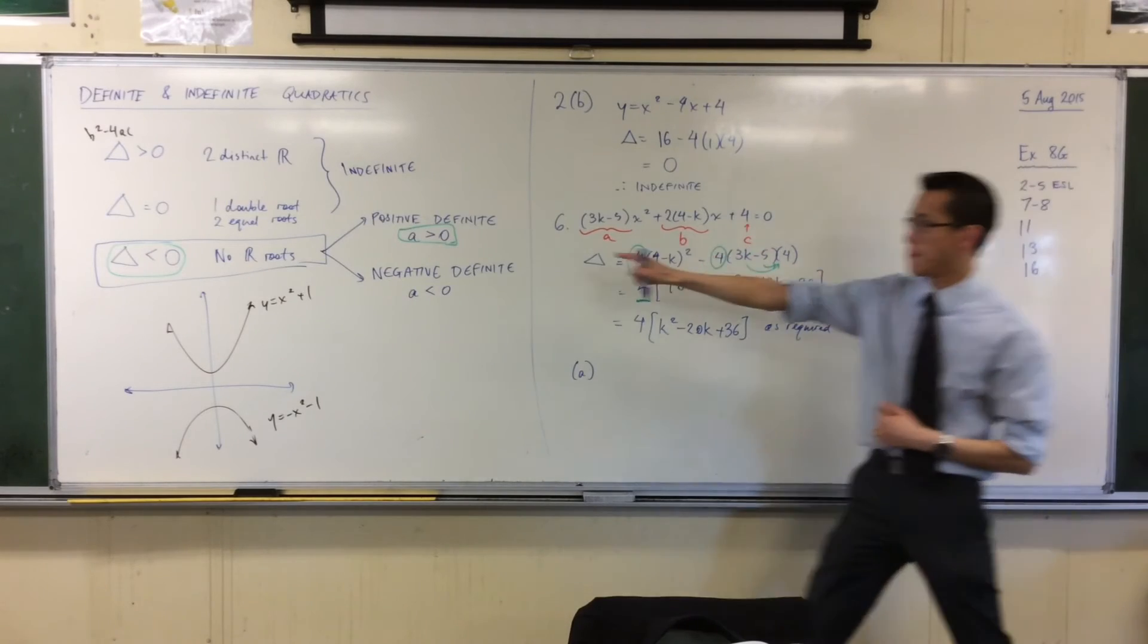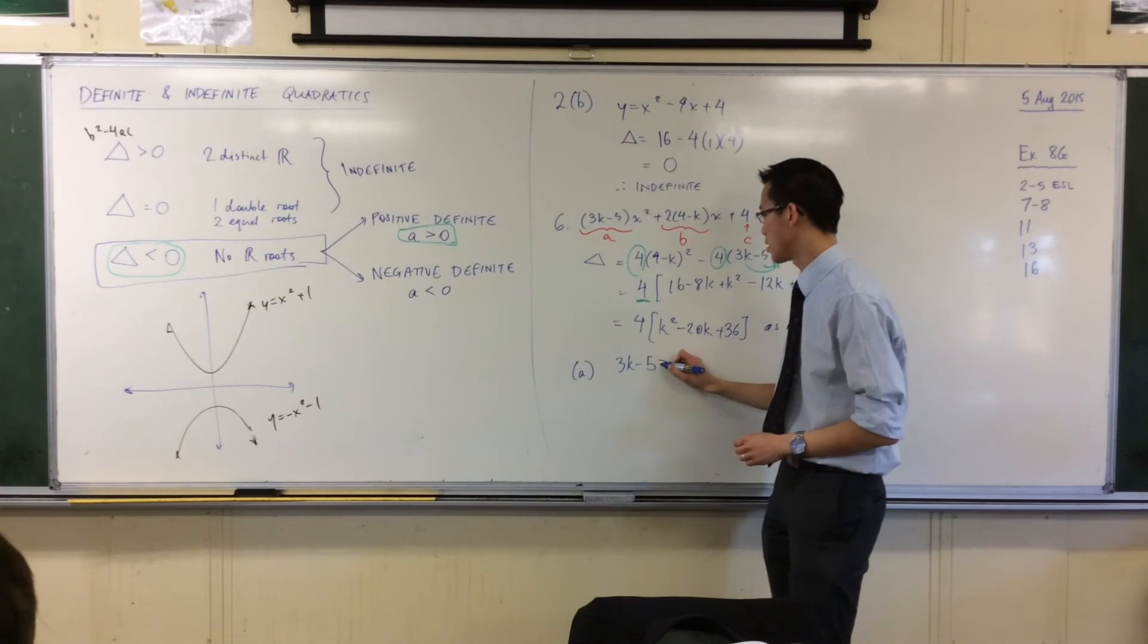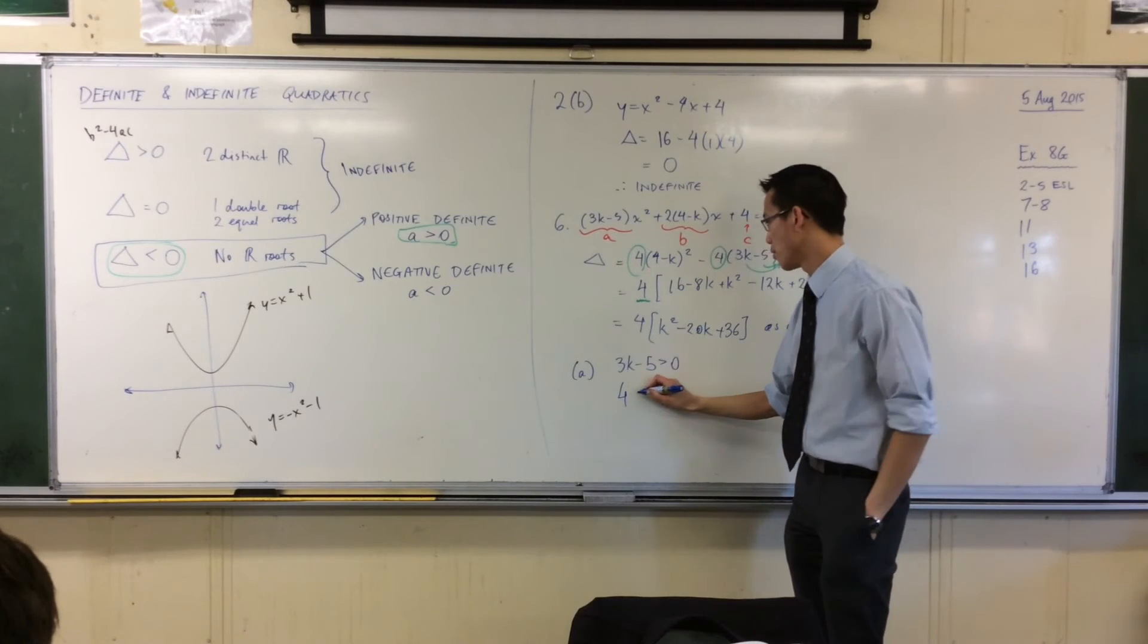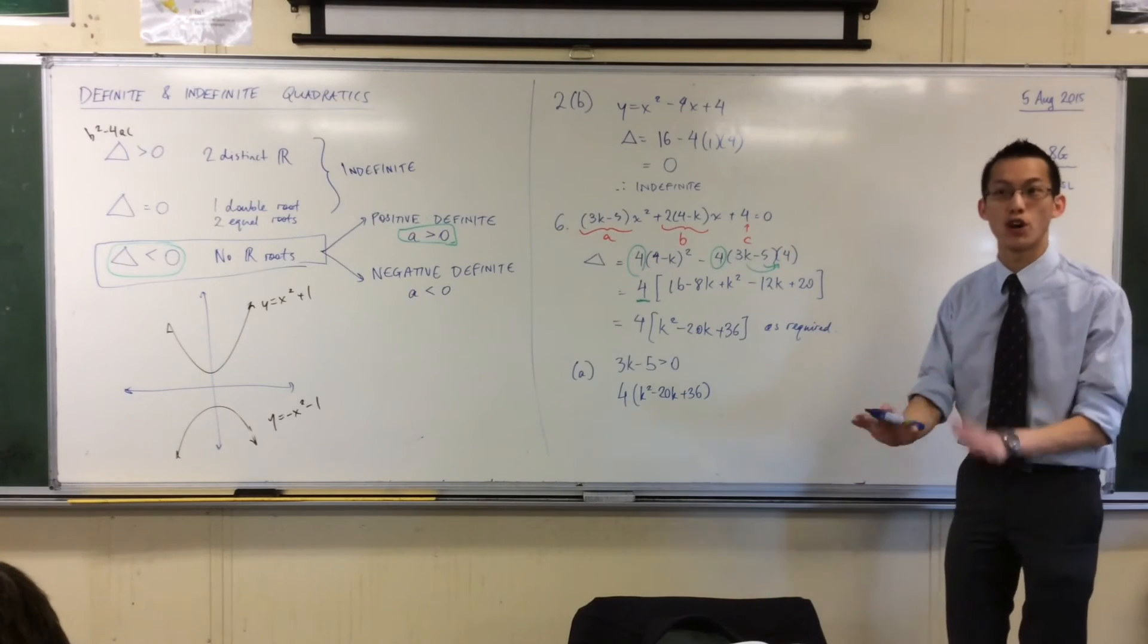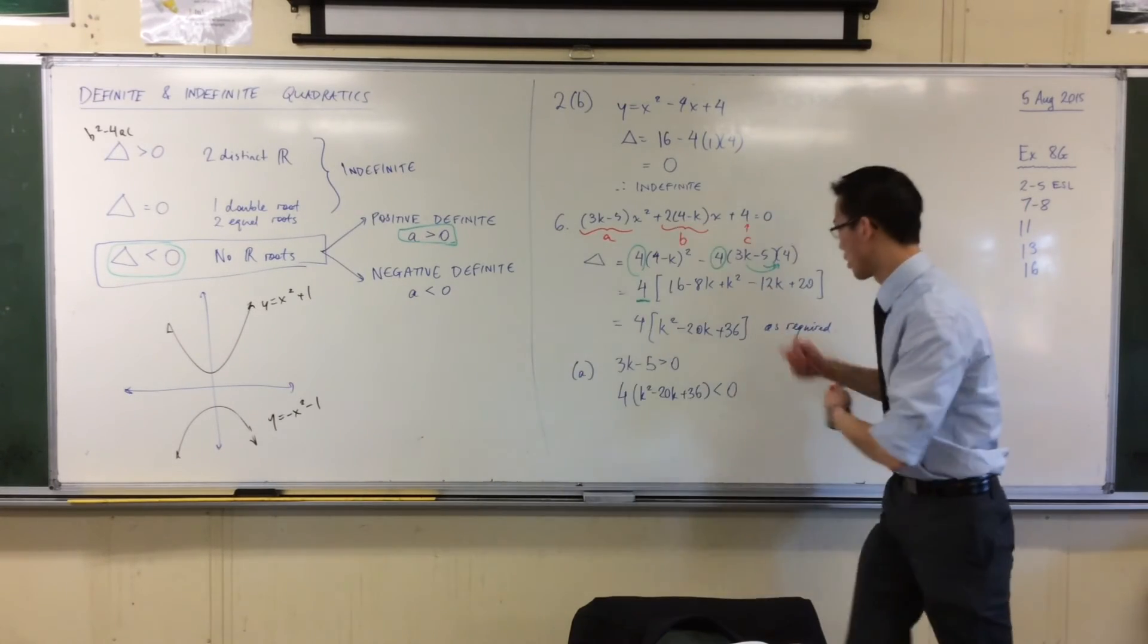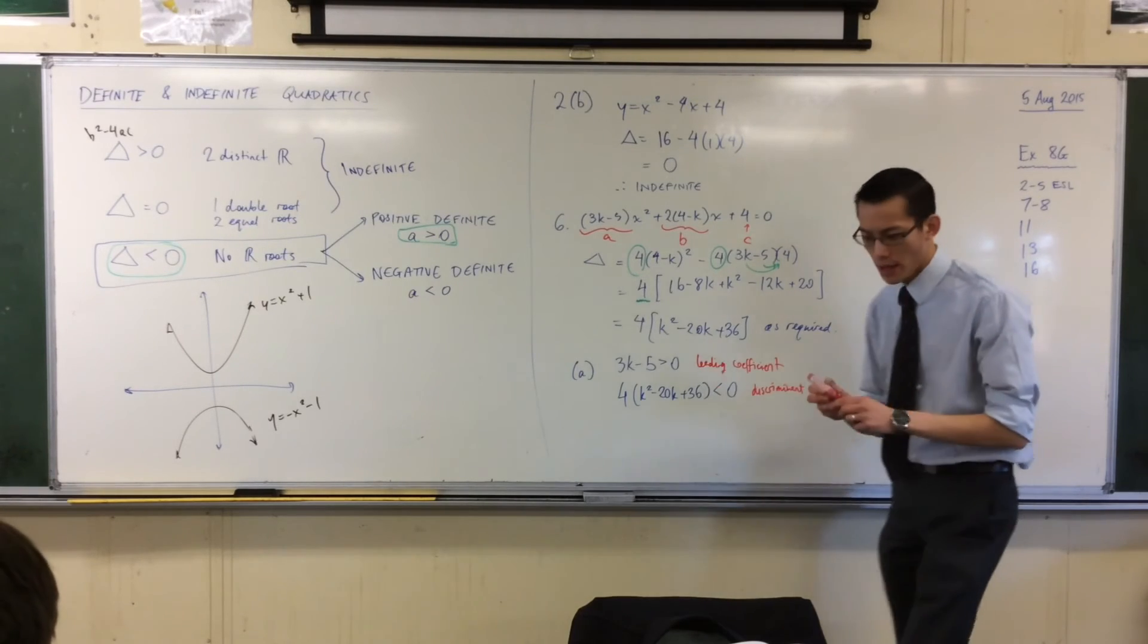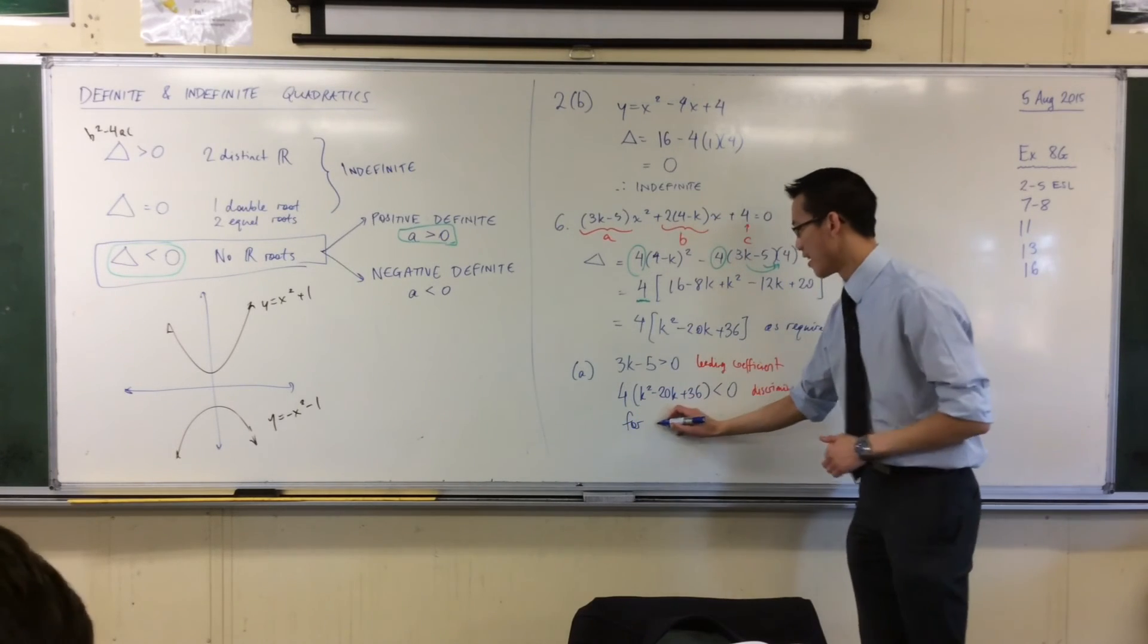Right? Let's start with the easy one first. A, right? Because A was given to us right there, and it's quite simple. So I've got 3k minus 5 has to be greater than 0. That's got to be positive to make it concave up. And then I've got this guy, the discriminant, for k squared minus 20k plus 36. That has to be negative, so I don't get any roots. So just to help you see what's going on, this is the leading coefficient, and this is the discriminant, and this is what I must satisfy, such that for positive definite, that's what I want.